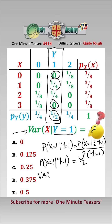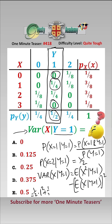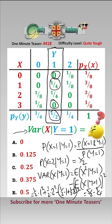Therefore, the variance of x given y equals 1 is equal to the expected value of x squared given y equals 1, minus the expected value of x given y equals 1, squared. That equals a half times 1 squared, plus a half times 2 squared — that's the expected value of x squared given y equals 1 — minus the quantity a half times 1 plus a half times 2, squared. That equals 5 over 2, minus 9 over 4, which is a quarter, which is answer C.